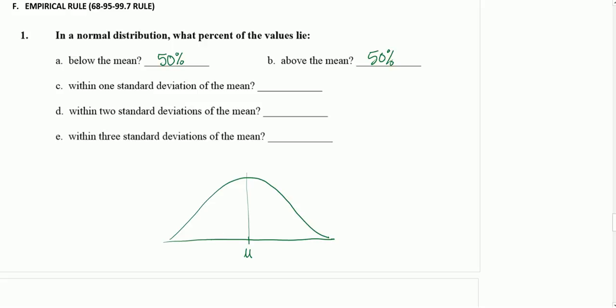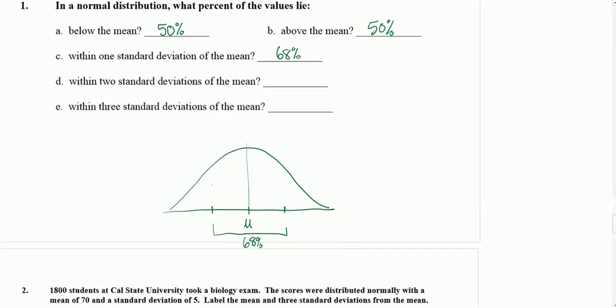If I go one standard deviation to the left and one standard deviation to the right, that covers 68% of our data. And when I'm meaning 68%, I'm meaning the area beneath the curve is 68% of the total area.